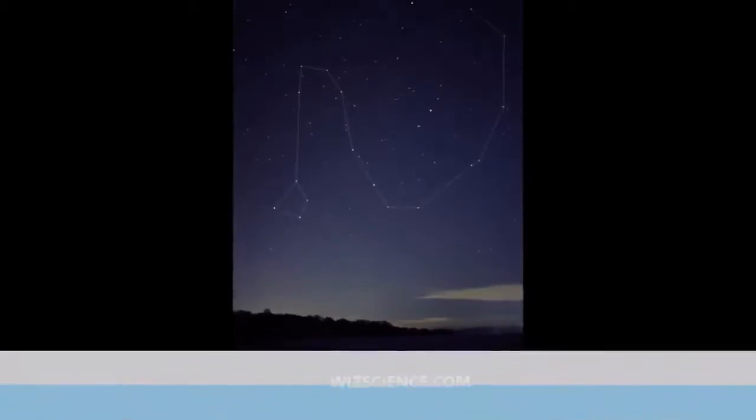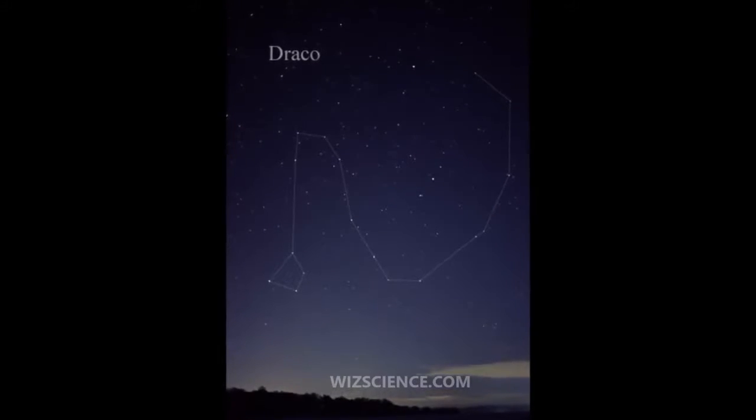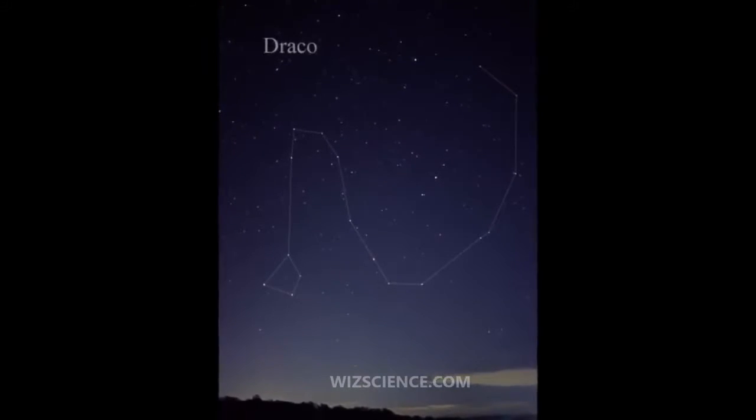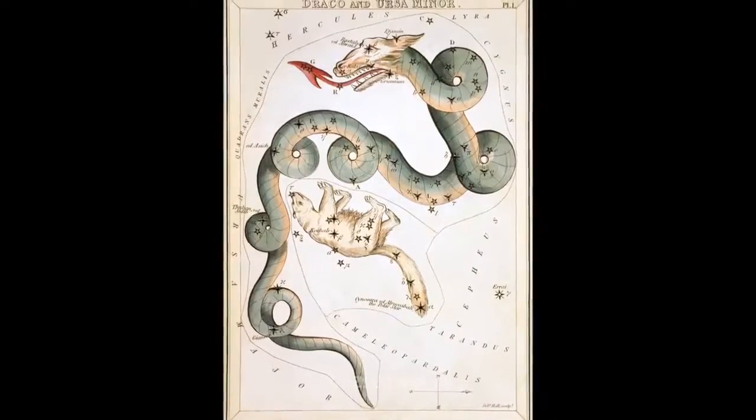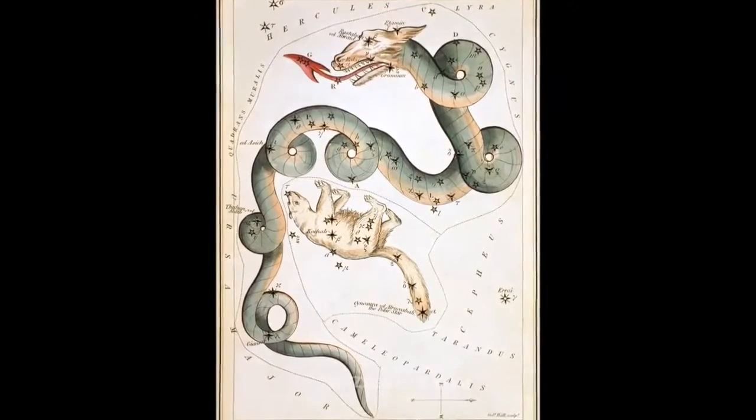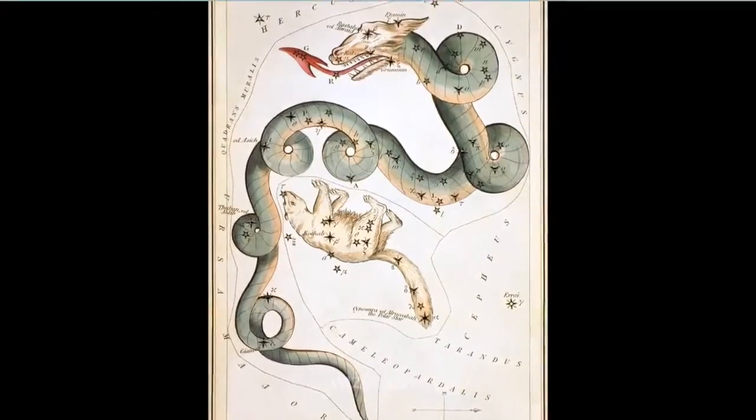Nu Draconis is a similar binary star with two white components, 100 light-years from Earth. Both components are of magnitude 4.9 and can be distinguished in a small amateur telescope or a pair of binoculars.